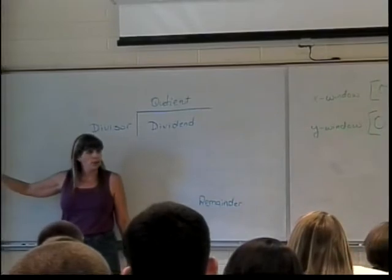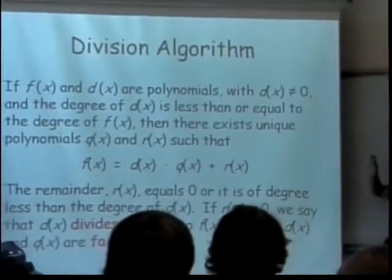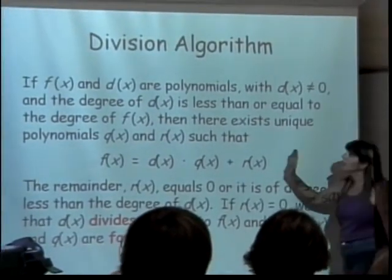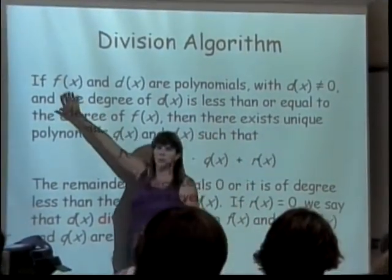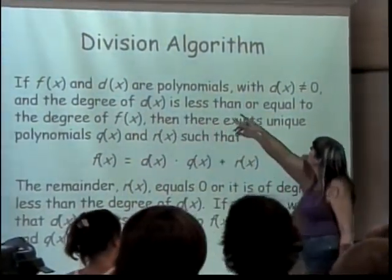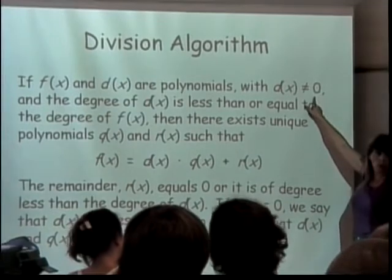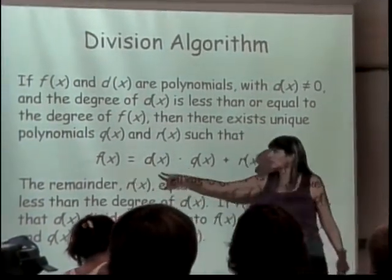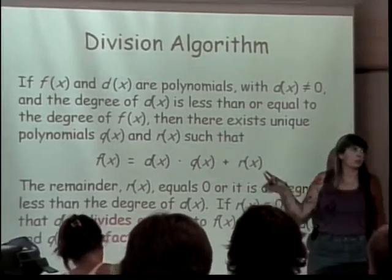We have this thing called the division algorithm. You do not need to write this down. You have actually used this most of your life, but now we're applying it to polynomials. What it says is if you have one polynomial and a divisor polynomial, then as long as you're not dividing by zero, you can write your original polynomial as the divisor times the quotient plus the remainder.